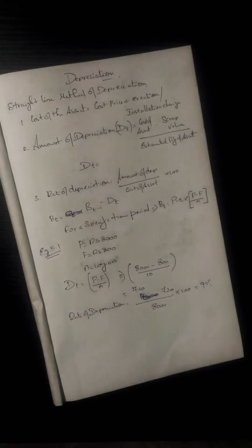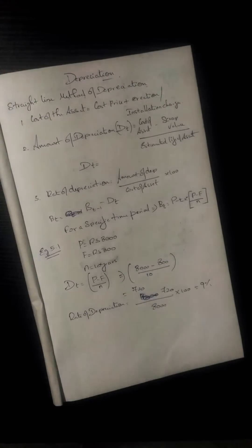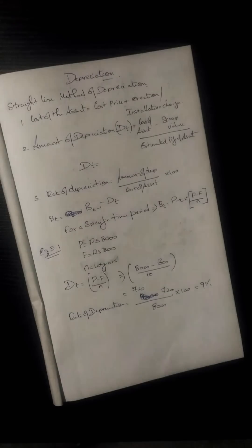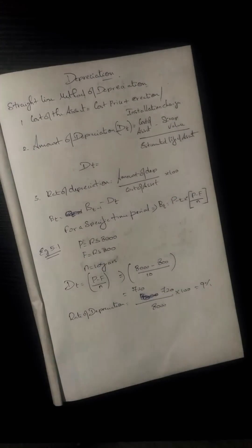Depreciation is the gradual and permanent decrease in the value of an asset from any cause. The value of an asset decreases over time. This can happen because the machine becomes outdated, or because technology improves and makes older machines less valuable.